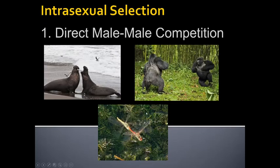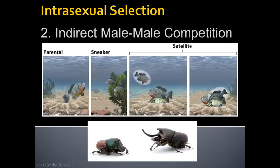Back to the dragonfly — there's interesting indirect intrasexual selection occurring in many dragonfly species. The female picks up a sperm packet from the male that he places on a secondary sexual structure. This structure has an additional feature — a little structure that almost looks like a bottle brush. Before he deposits sperm in the female's reproductive tract, this bottle-brush structure reaches in and scrapes out any sperm previously deposited there. It's a way to compete with previous males without directly fighting them — by removing their previously deposited sperm.